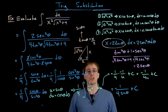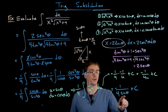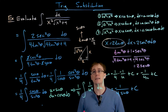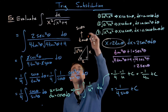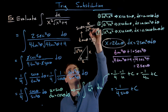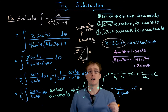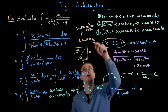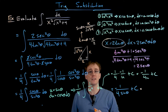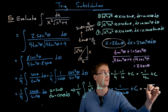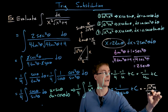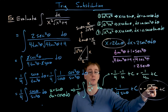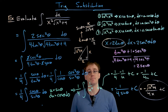We need sine of theta in terms of x. Using SOH-CAH-TOA, sine is opposite over hypotenuse — the opposite side is x and the hypotenuse is the square root of x squared plus 4. Substituting into our antiderivative, negative 1 over 4 sine of theta becomes negative 1 over 4 times (x over √(x²+4)), which equals negative the square root of x squared plus 4 over 4x plus C. That is our final answer for this problem.